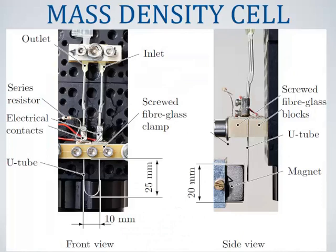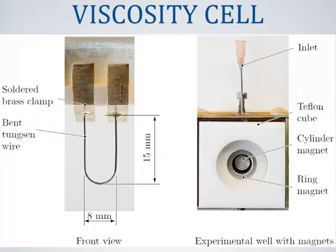This is a photograph of the mass density sensor. Here we see the stainless steel tube which is clamped by two fiberglass blocks. Here you see the permanent magnet which we use for the magnetic field. This is a picture of a first viscosity sensor. Here you see the 400 micron thick tungsten wire which is brazed into two solid brass blocks which is necessary to get very stable devices.